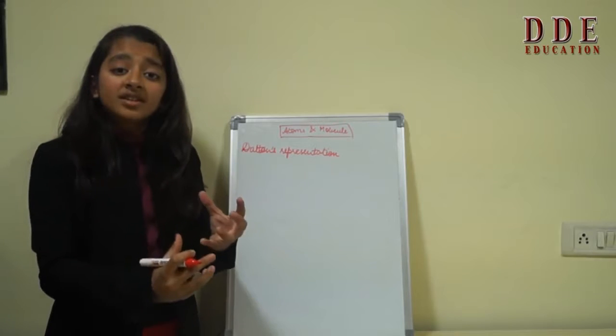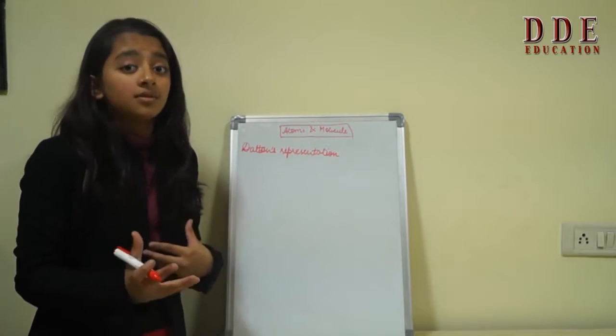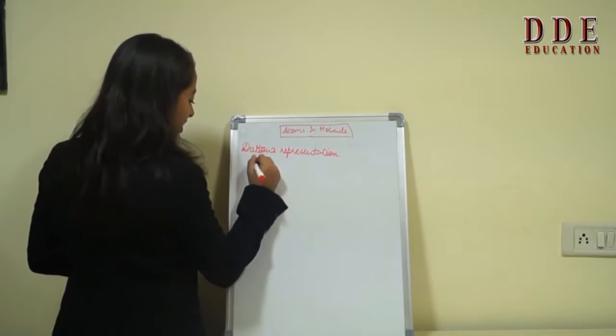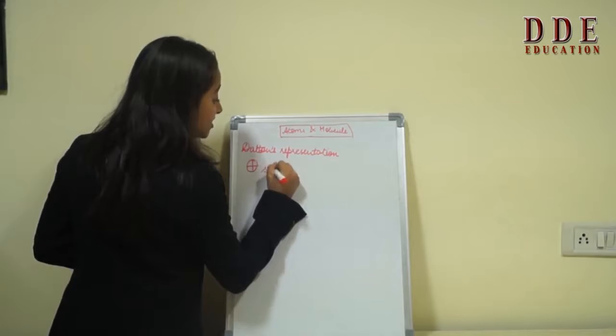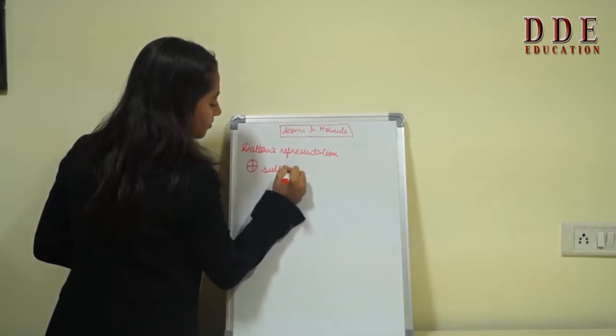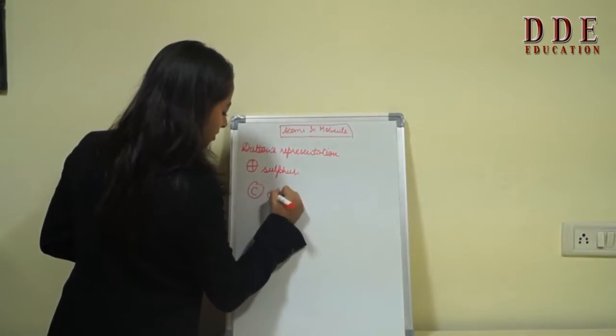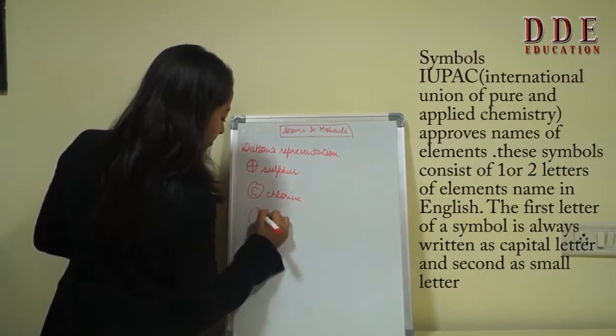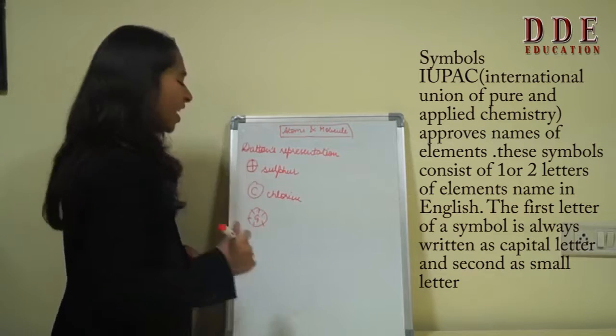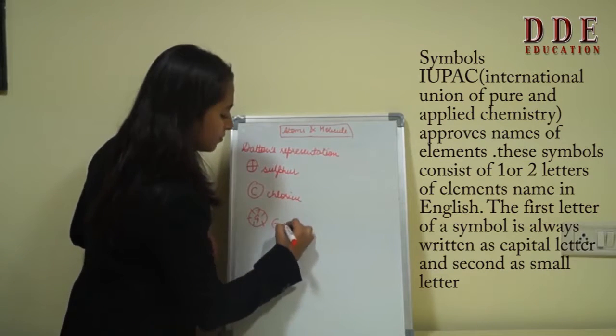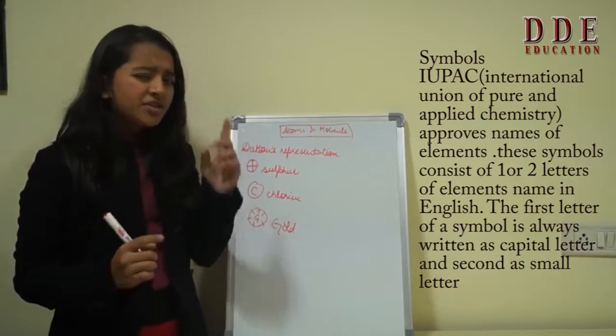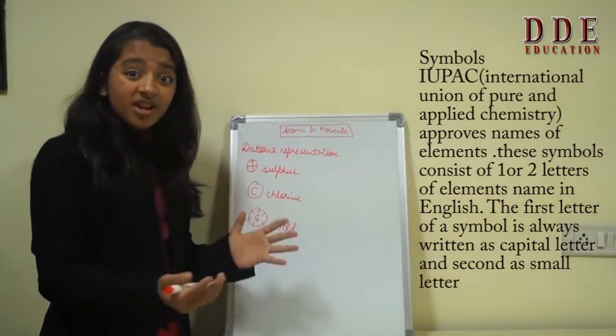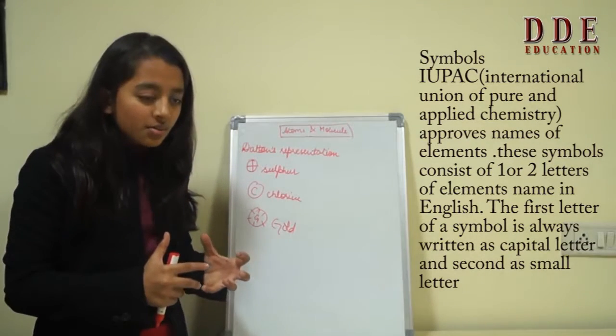Dalton represented these atoms in form of symbols. Symbols for every element. Like for sulphur, he had such a symbol. This represented silver, chlorine, gold and many others. But my friends you might also be finding it difficult to learn these symbols and write them in exams and also discuss these symbols.